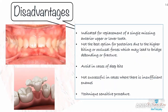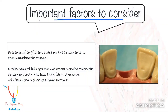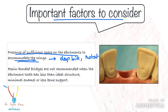Important factors to consider for a resin bonded bridge: they are not recommended in situations where there is no space to accommodate the wing-like extension that covers the abutment tooth. For example, a deep bite case, cases where the abutments are rotated, have minimal enamel, or the abutment tooth itself has less than ideal tooth structure or bone support.